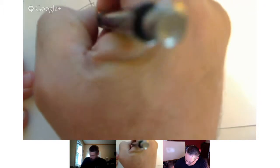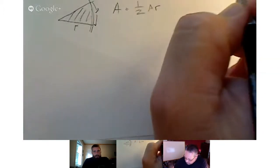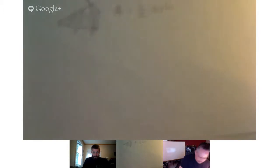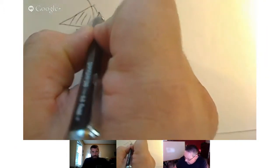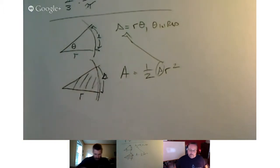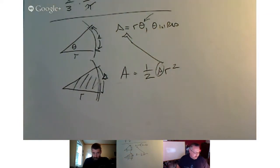The area formula was one half R squared theta. That's pretty straightforward. The only thing we have to worry about is finding the sector length, and of course we know that is S equals r theta. So as long as we've got those and we've got the conversion into radians, that part is fine.